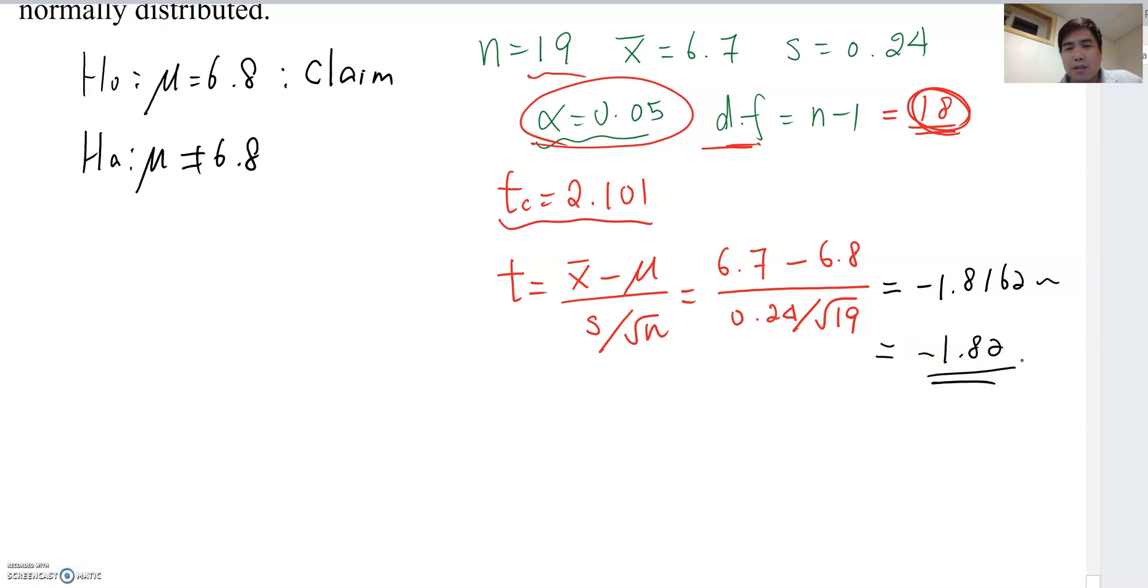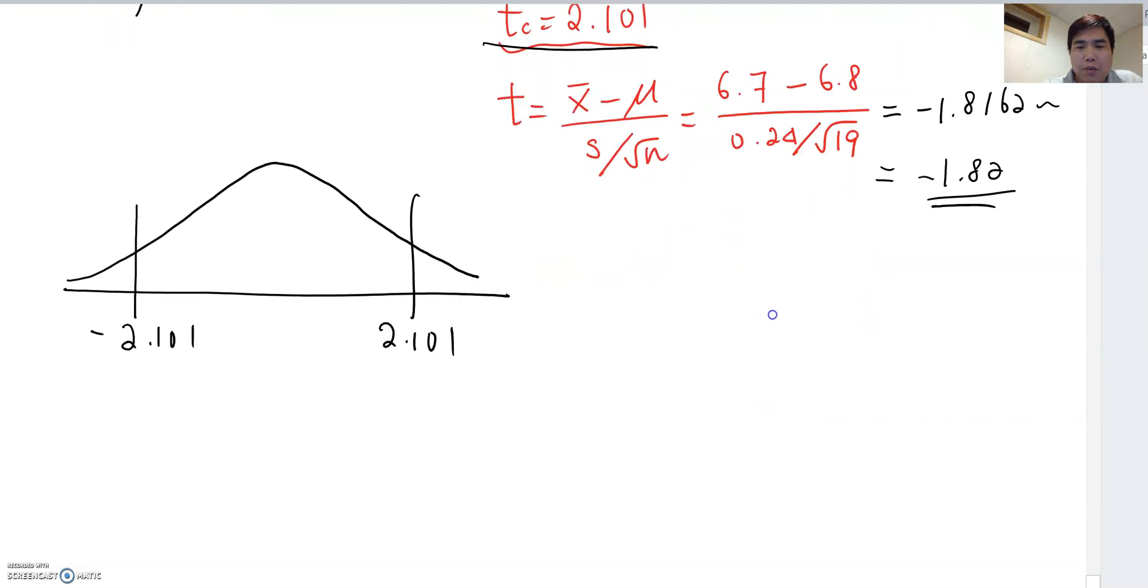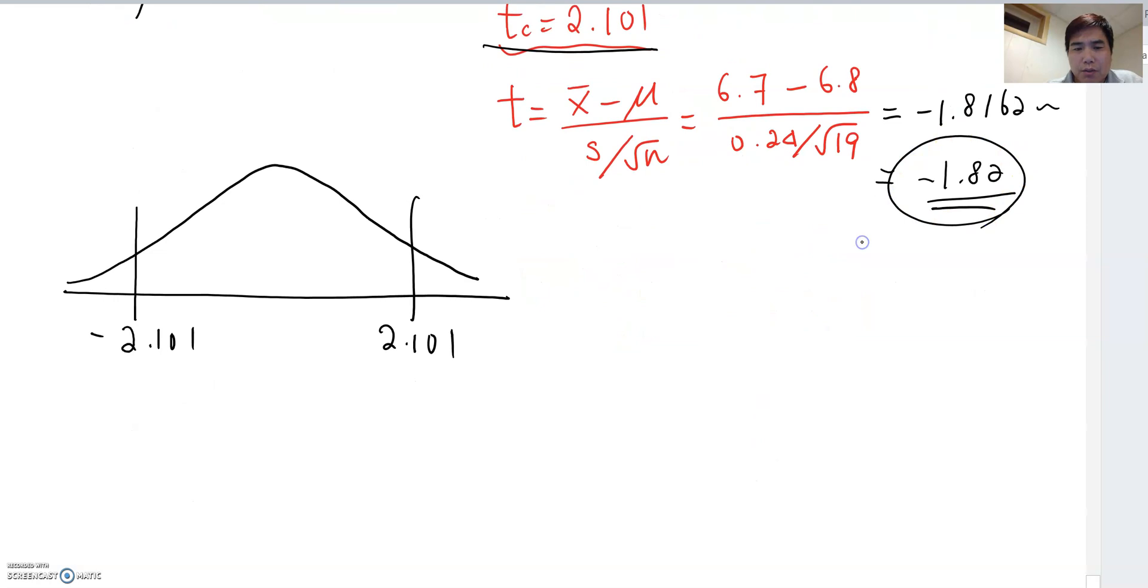Now it is time to draw the normal graph using the T critical value, and we set up the null and alternative hypothesis areas. As you see, we have T critical equal to 2.101. Two tail, which means negative 2.101 and 2.101 here. And then we bring out this value negative 1.82.